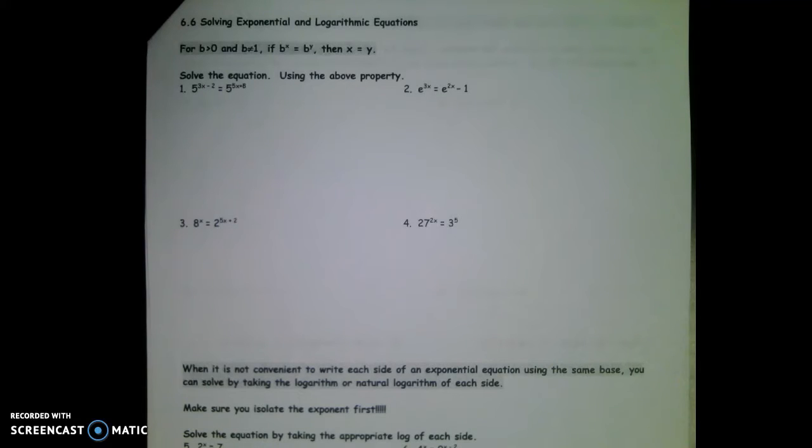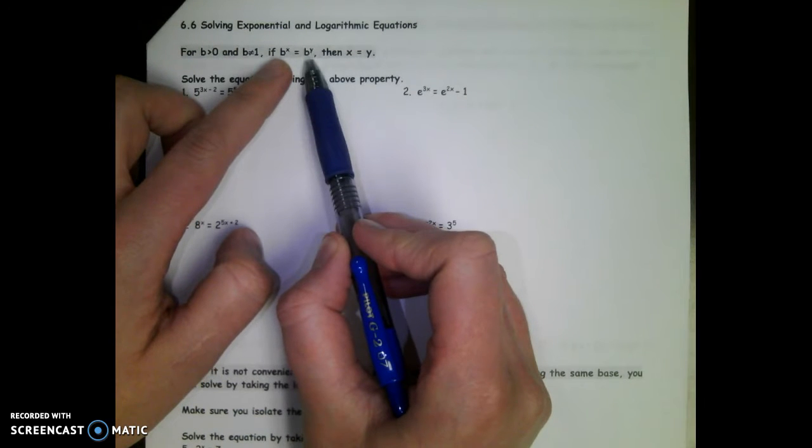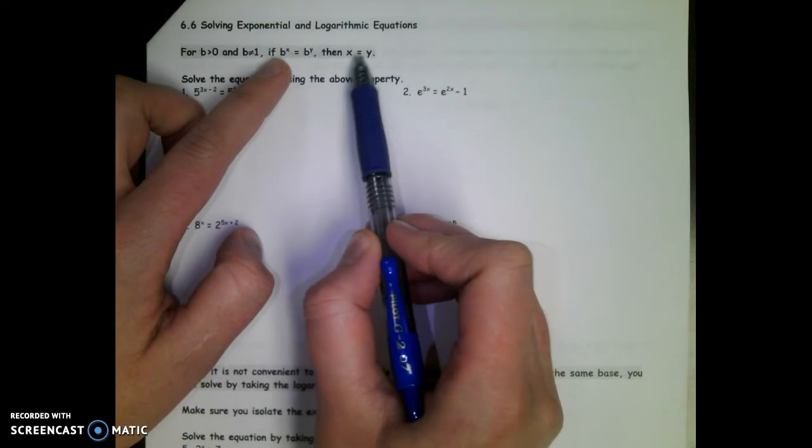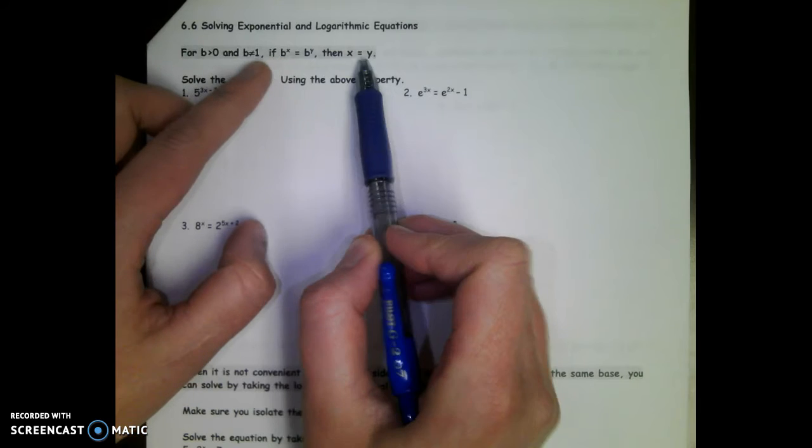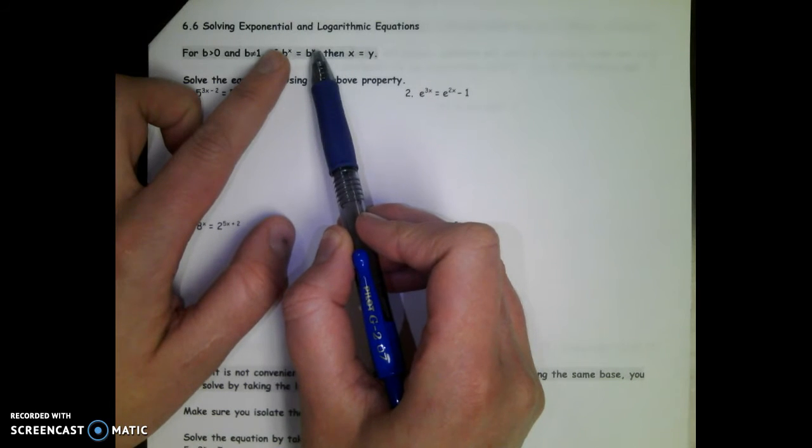Today we're going to solve exponential equations, and there's two types we're going to look at: exponents on both sides and exponents on one side. Usually when we have exponents on both sides, there's one specific way we're going to solve them using this property. If b to the x equals b to the y, then x must equal y. If the bases are exactly the same, then the exponents must also be the same.